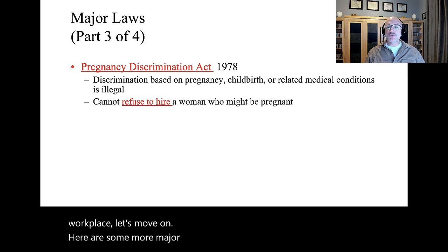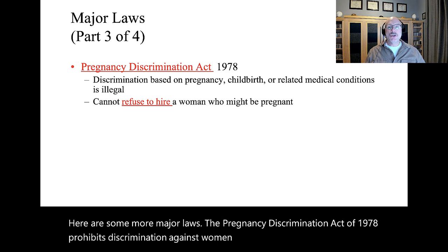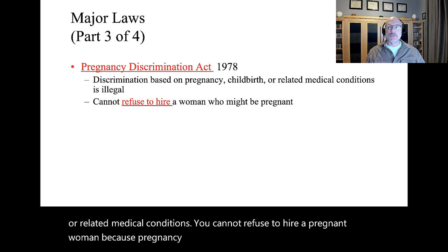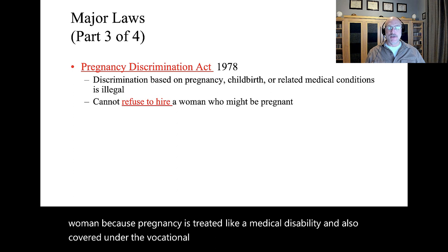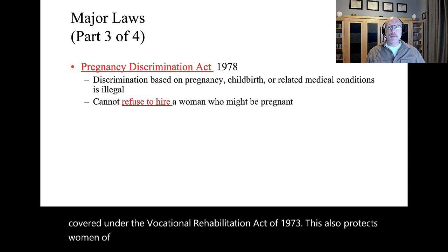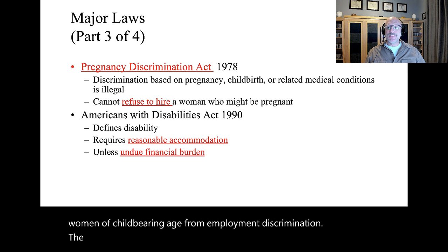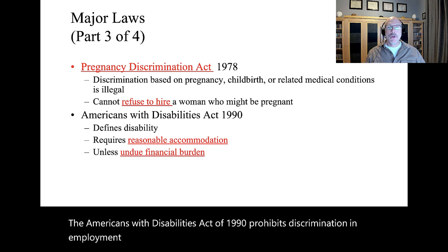The Pregnancy Discrimination Act of 1978 prohibits discrimination against women because of pregnancy, childbirth, or related medical conditions. You cannot refuse to hire a pregnant woman because pregnancy is treated like a medical disability and is also covered under the Vocational Rehabilitation Act of 1973. This also protects women of childbearing age from employment discrimination.